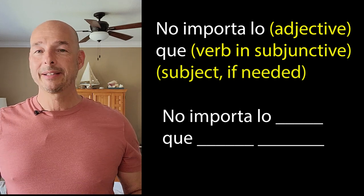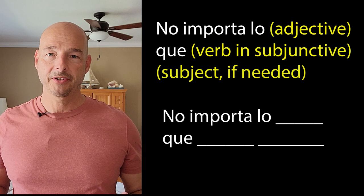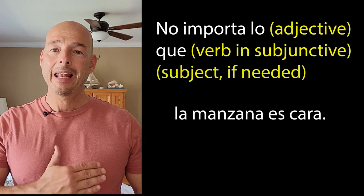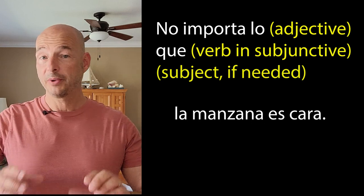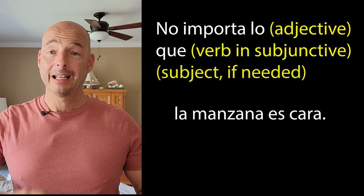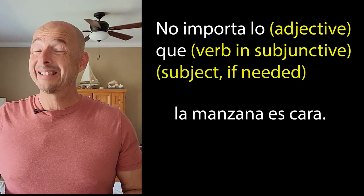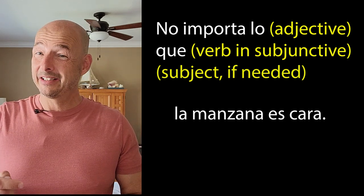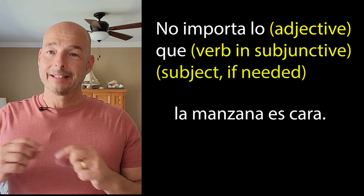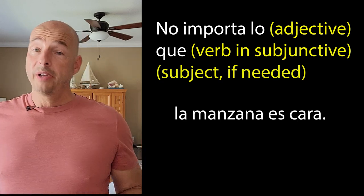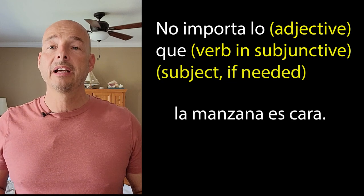First of all, let's choose a really simple sentence: how about 'the apple is expensive'? La manzana es cara. Pretty easy, right? So we have a subject — la manzana, the apple. We have a verb in there, but it's in the present indicative — but at least we know what verb we're dealing with: ser. And we have an adjective: cara. So now we have enough to work with.